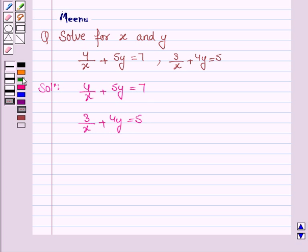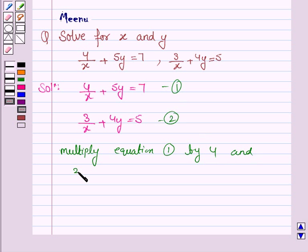We will solve the system of equations by equating the coefficient of x or y. Here we will equate the coefficient of y. To do this, multiply equation 1 by 4 and equation 2 by 5, and subtract equation 2 from 1.